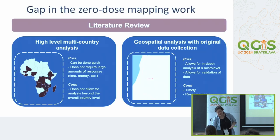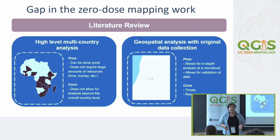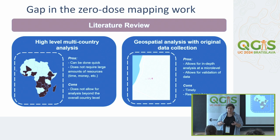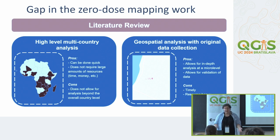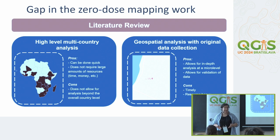For the methods, we began with a literature review to understand what others had done—what worked and what didn't. We found that everything fell into two buckets. The first was a high-level multi-country overview, which can be done quickly without large amounts of time and money, but only gives an estimate total for an entire country—not very useful. The other was geospatial analysis with original data collection, which allows in-depth micro-level analysis and data validation, but is very time-consuming and costly. We didn't have those resources, so we had to figure out something else.